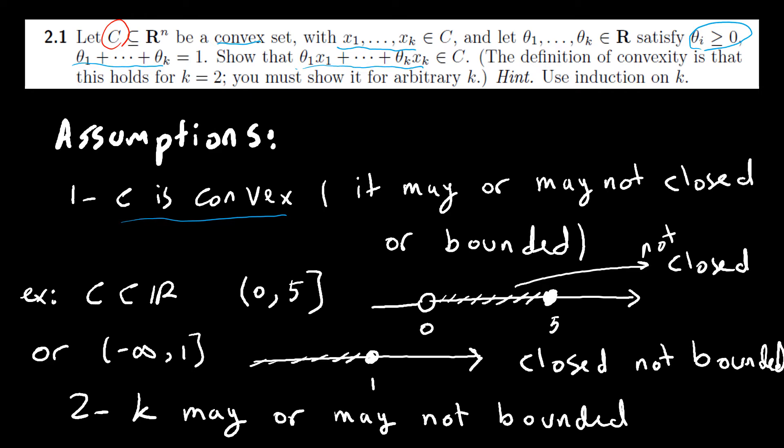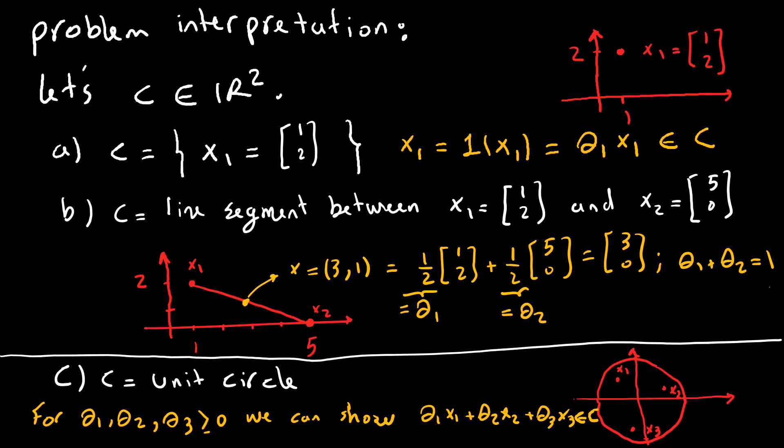For example, this case is not a closed set because sequence 1 over n belongs to this set. However, it does not converge to a point that belongs to set C. And the other one from negative infinity to 1 is a closed set but it is not bounded. And k is not bounded in this case.